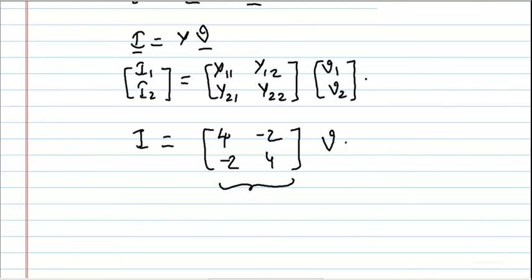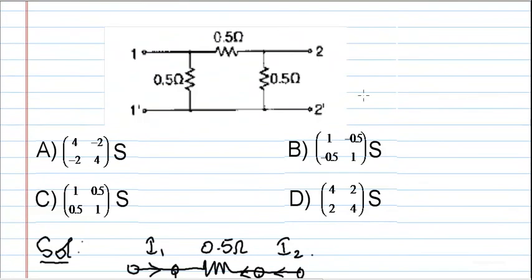Hence the correct option is A, which is 4, minus 2, minus 2, 4 Siemens.